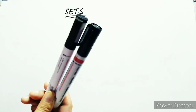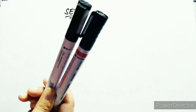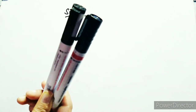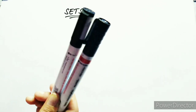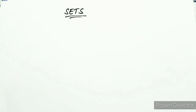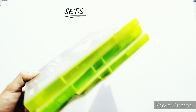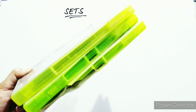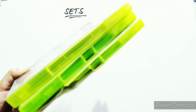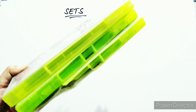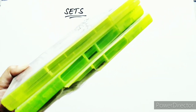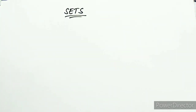A set is nothing but a collection of things that have something in common. What is common in this set? Both are Marker Pens. Both are used for writing. Take another example — a set of CDs, which is used for watching.